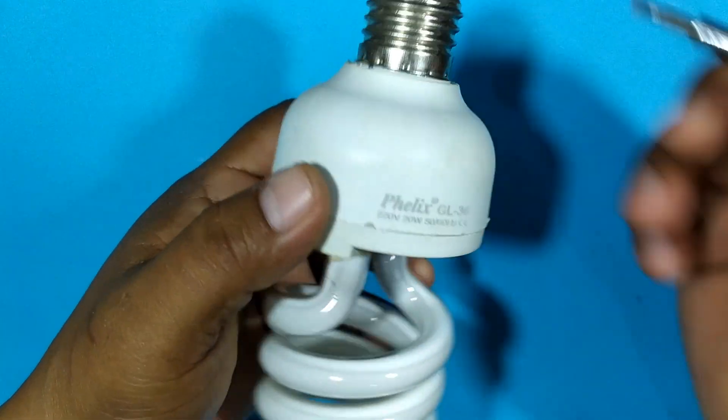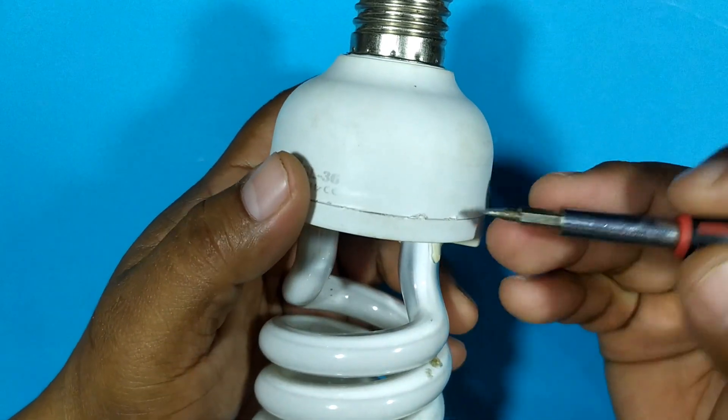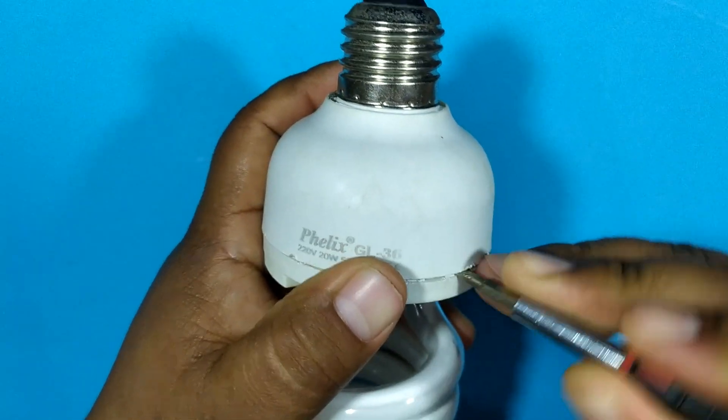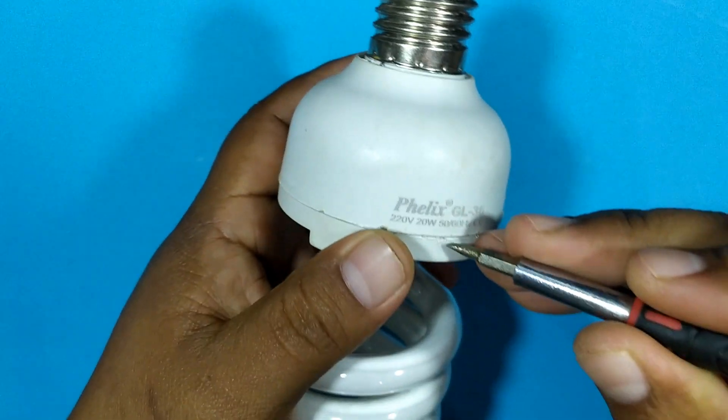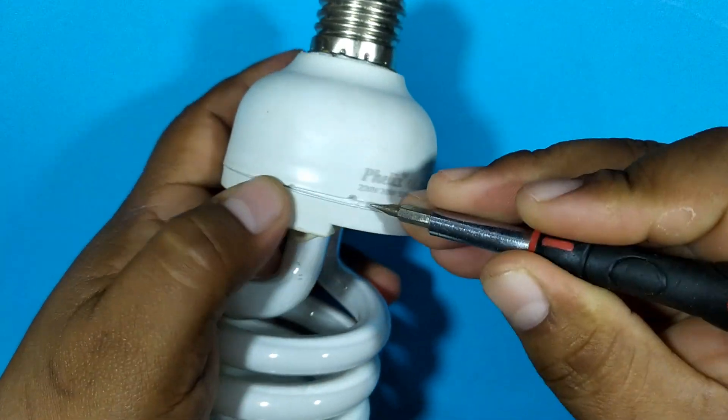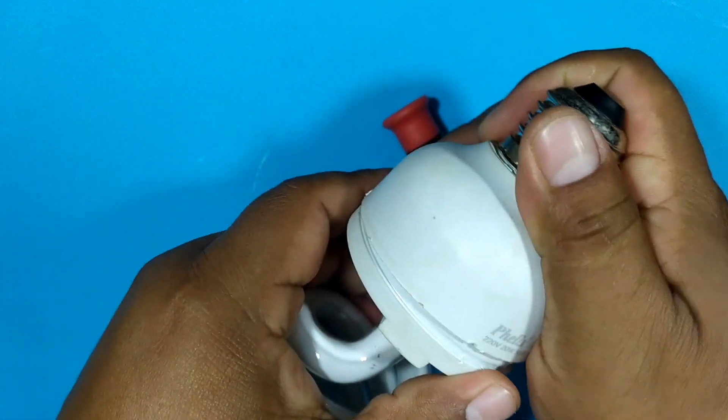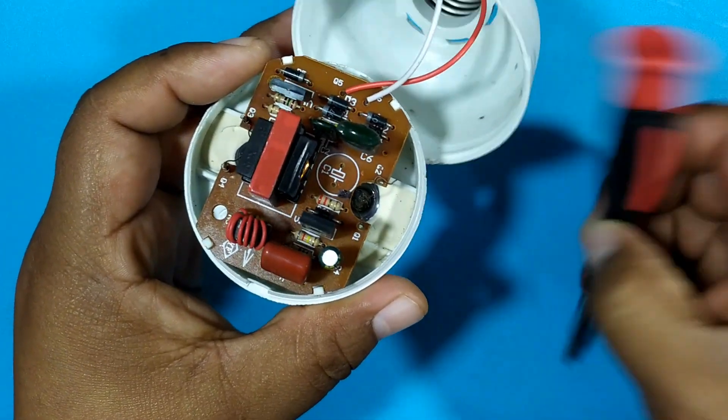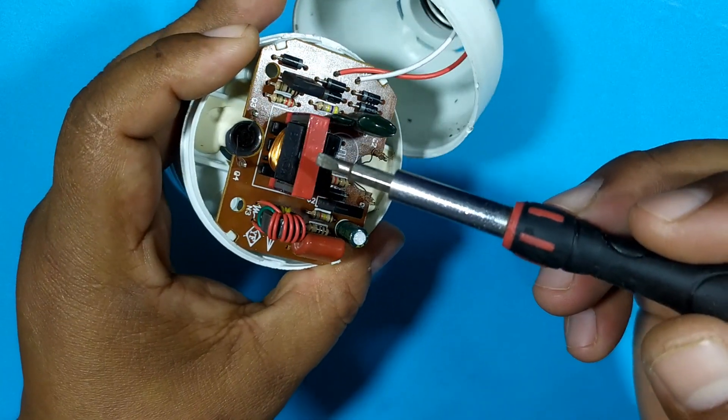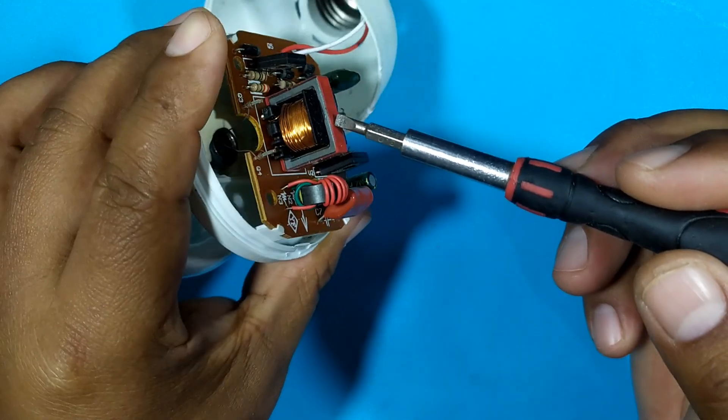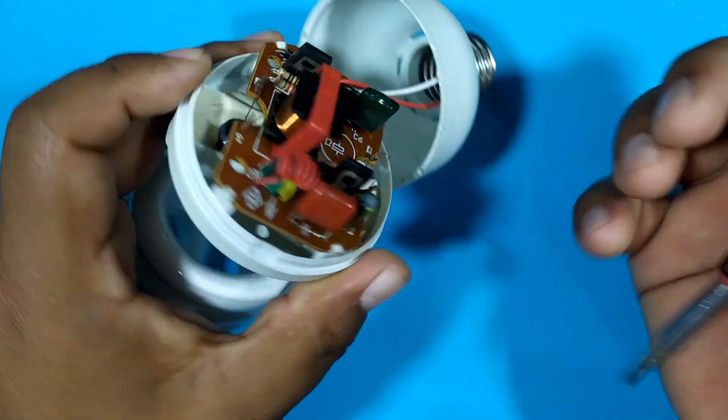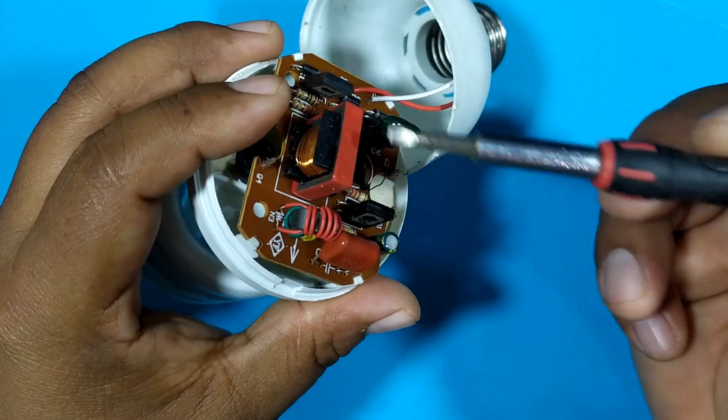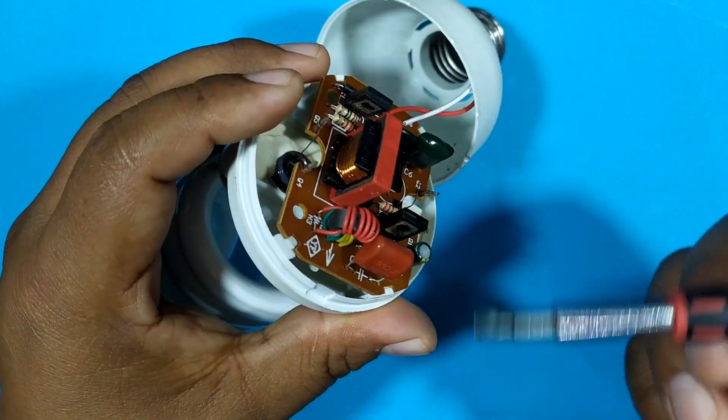Now we are going to remove the cover. For this, you must use a flat screwdriver, the flattest and thinnest you have, and begin to leverage the slot it has. Here we have the electronic card. What matters most to us is this component, which is a coil. Keep in mind that the higher the power of your light bulb, the larger the coil will be. Now we are going to remove the coil from the electronic board using the soldering iron.